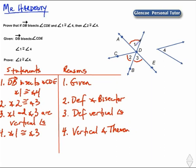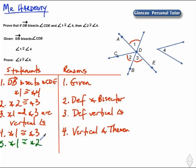Now we recognize that angles 1, 2, and 3 have all been marked congruent. Consider steps 2 and 4: angle 2 was congruent to angle 3, and angle 1 is congruent to angle 3. We will state in step 5 that angle 1 is congruent to angle 2. Where two angles are congruent to the same angle, they're congruent to each other — and that is the transitive property of congruence.